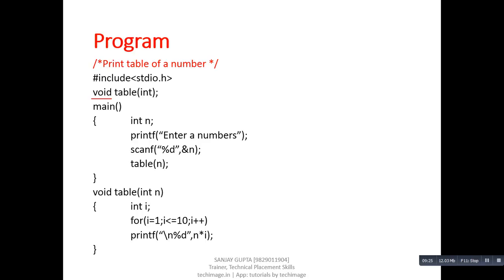In the main function, we have called the table function passing n as input. The definition of the table function receives the value in variable n. A for loop processes 10 times and displays the table of the number received in n. The logic multiplies n with the value of i — so if n is 5, first time 5×1=5, then 5×2=10, then 15, 20 and so on. This table function prints 10 values on the console, and we cannot return all 10 values back to main. That is why we use void as the return type.